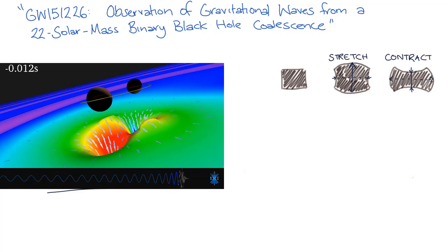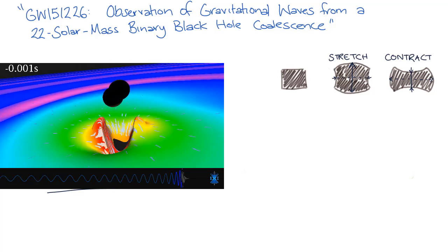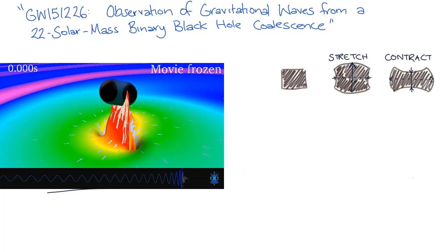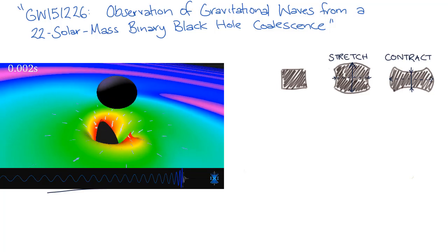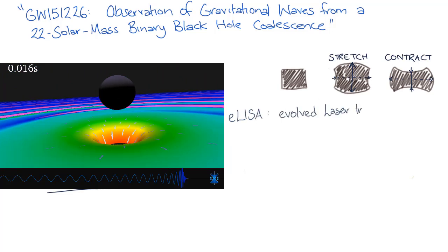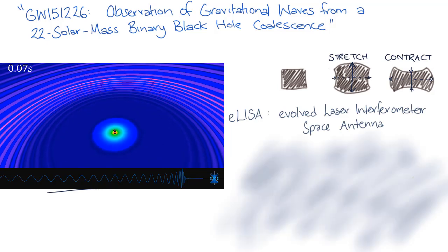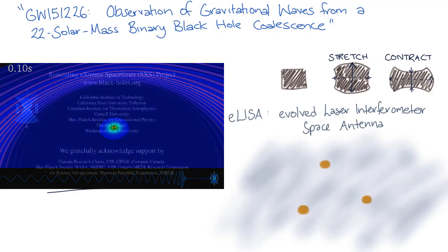Currently, we've only just proved that we can directly detect gravitational waves from Earth. In the future, we can build bigger and better detectors, including by improving the advanced LIGO detectors, and by building detectors such as ELISA in space. These detectors can give us information about our universe that is impossible to get from other sources.